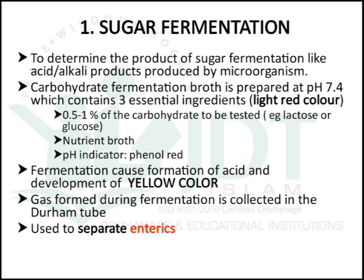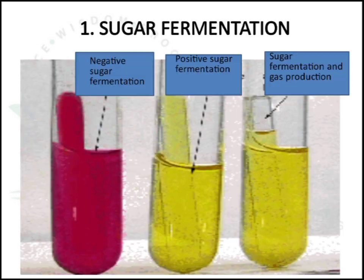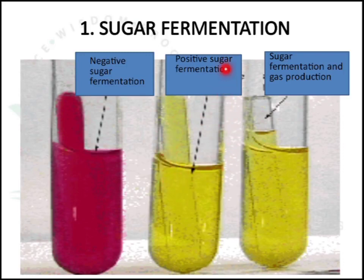This test is mainly used to separate or identify enteric groups. In a negative test, we get red color. For a positive sugar fermentation test, with production of acid, we get yellow color. In the case of gas-producing fermentation, we get a gas bubble in the Durham tube.